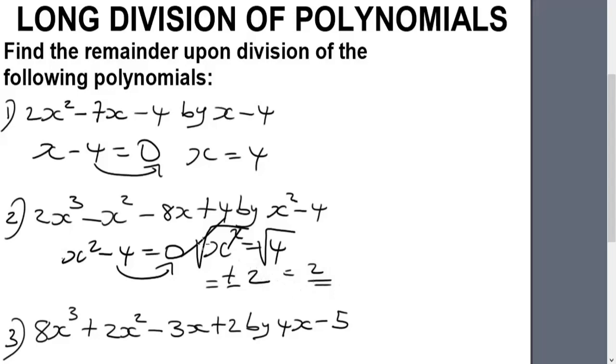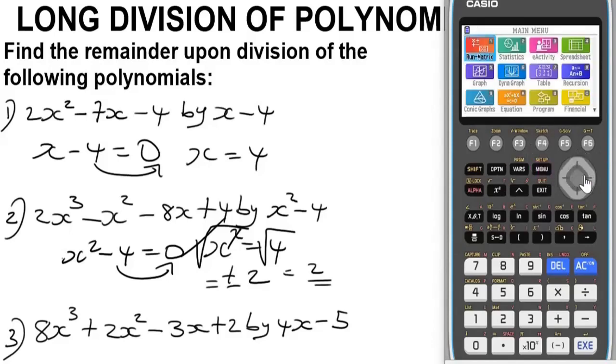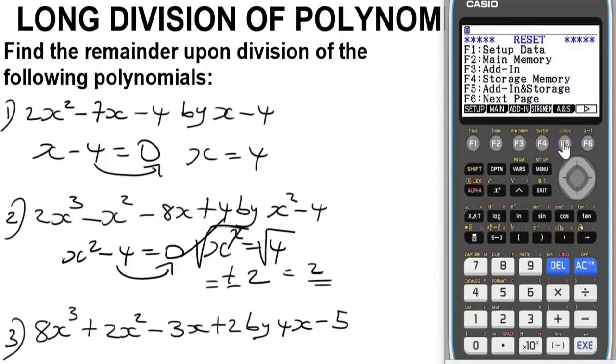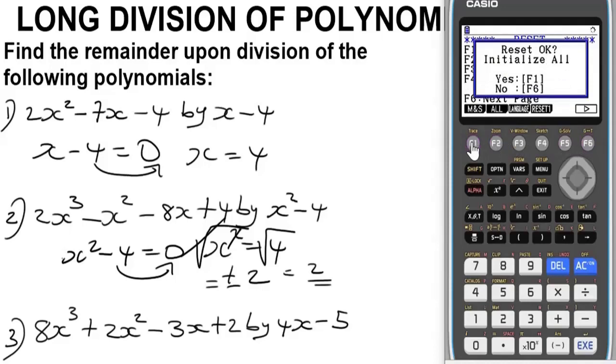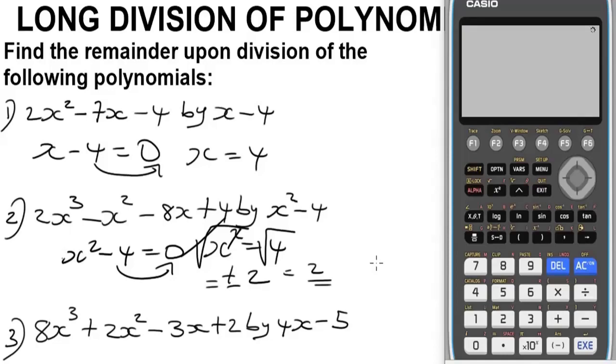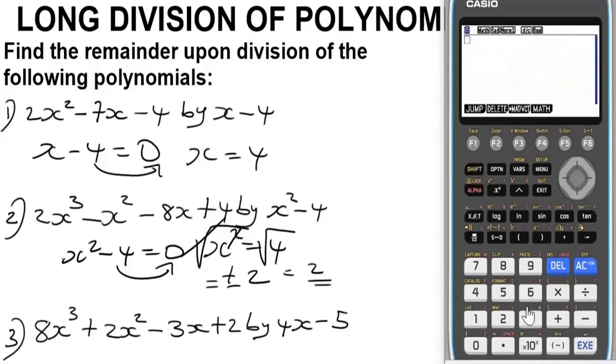Now we are going to store 2 as x on this calculator. To do that, you reset it to remove the previous value stored. We go to menu, then system - very important to avoid unnecessary error. Then press F5 for reset, F6, F2, F1, and it's going to initialize. Once it's done, we're going to store this value 2 as x on the calculator and use it to solve for the remainder. Press the arrow button, alpha x, EXE. It's stored.